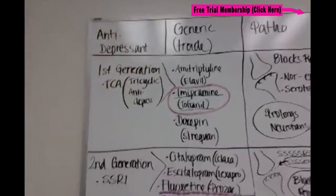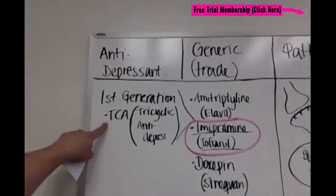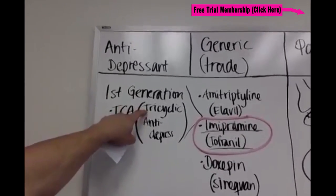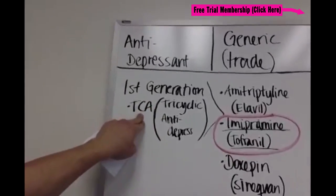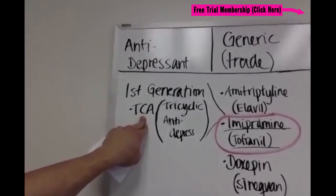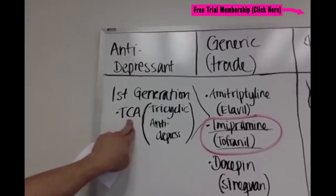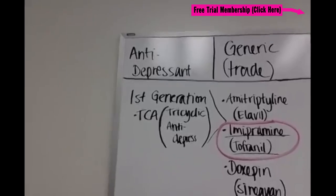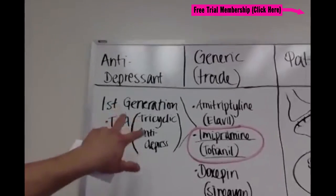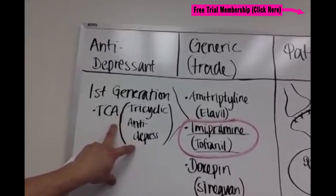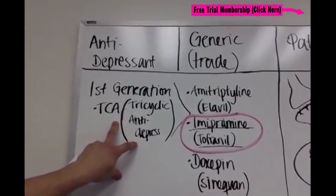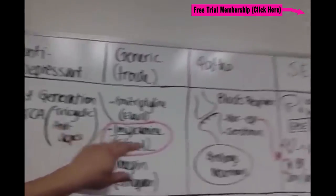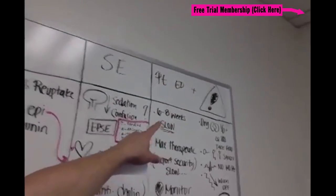Our first one is TCAs, known as first-generation antidepressants — tricyclic antidepressants. I remember this as TSA airport security. If you've ever taken a flight, you have to go through TSA security and it's really slow and drawn out. So TCAs are very slow in terms of getting to the therapeutic range — usually takes a few weeks, if not six to eight weeks.